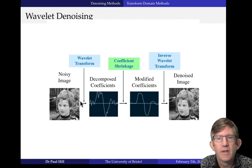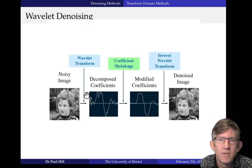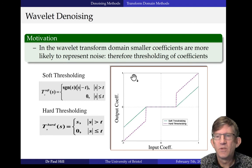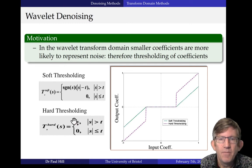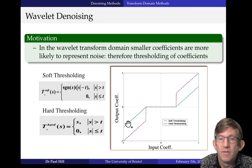To describe the wavelet denoising pipeline: we take a noisy image, apply the wavelet transform to get decomposed coefficients, then perform coefficient shrinkage — a formal name for thresholding — to get modified coefficients, then apply the inverse wavelet transform to get the denoised image. There are two main types of thresholding: hard thresholding, which simply zeros out anything within the range ±t; and soft thresholding, which is a softer approach that also modifies the retained coefficients outside the threshold.